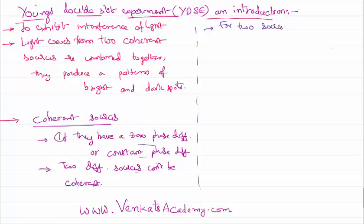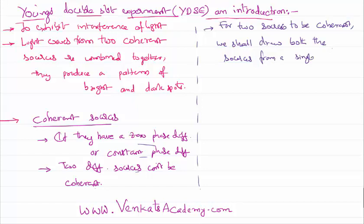So for two sources to be coherent, we shall draw both the sources from a single source. That's the rule — we shall draw both sources from a single source. Because they are drawn from the same source, according to Huygens' principle, every point on the wavefront behaves like a source, so they can have a zero phase difference or a constant phase difference when coming from both sources.